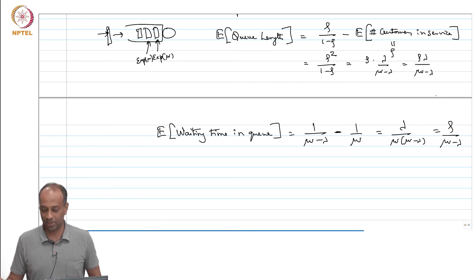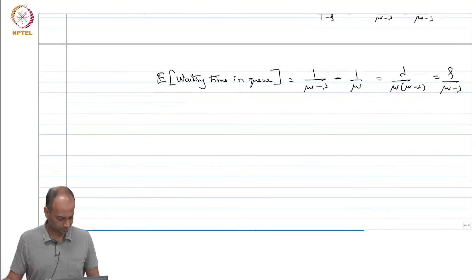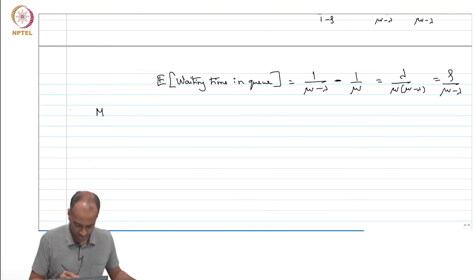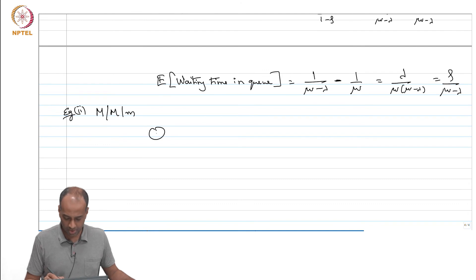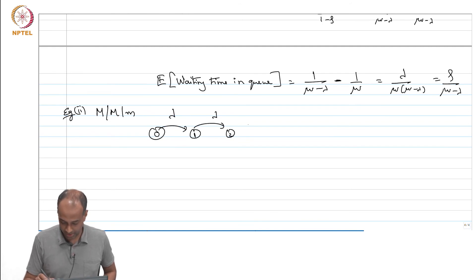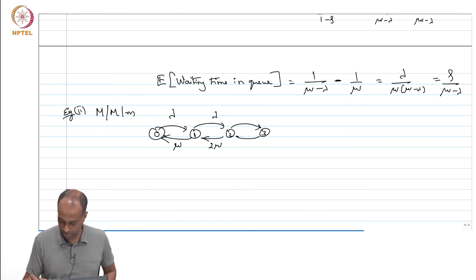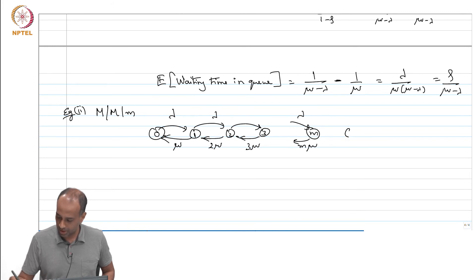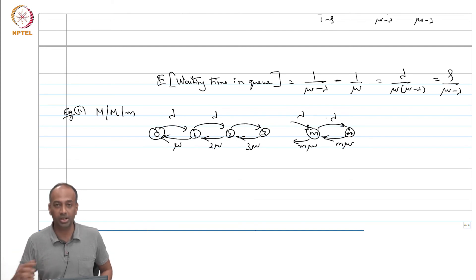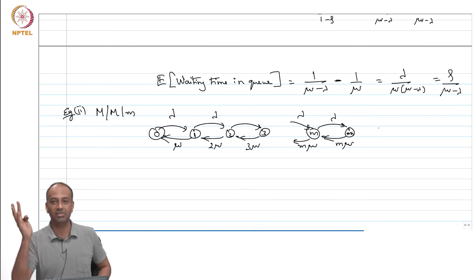So that is a sanity check and the M/M/1 queue is now fully understood. You can also do example 2: the M/M/m queue, where you have m servers. The arrival rates are all lambda. When you have one customer the service rate is mu, two customers it is 2mu, 3mu and so on till m, where it becomes m*mu. Beyond that you still have only m*mu because there are only m servers, and queuing only begins after there are m customers in the system.